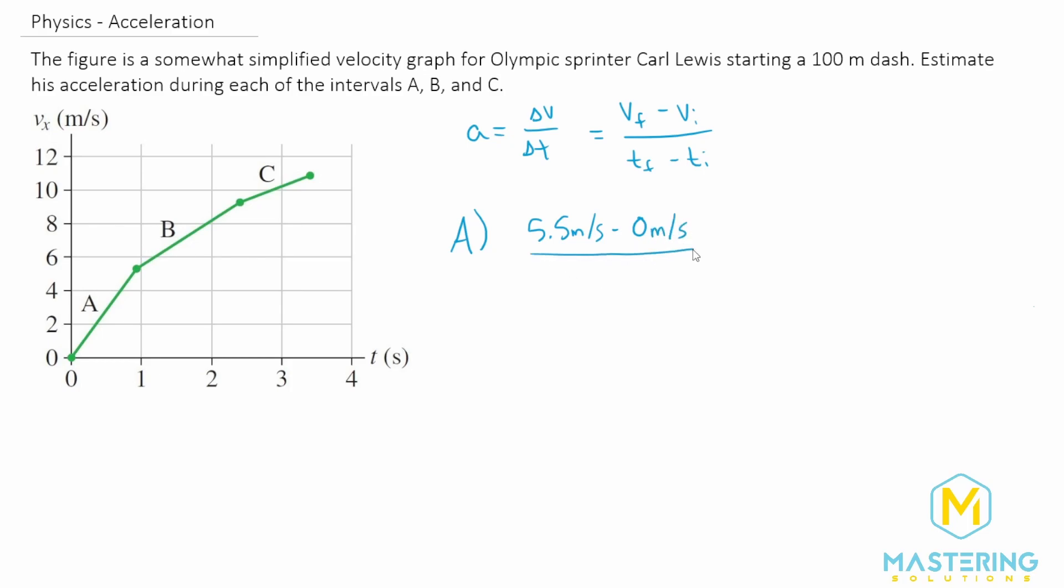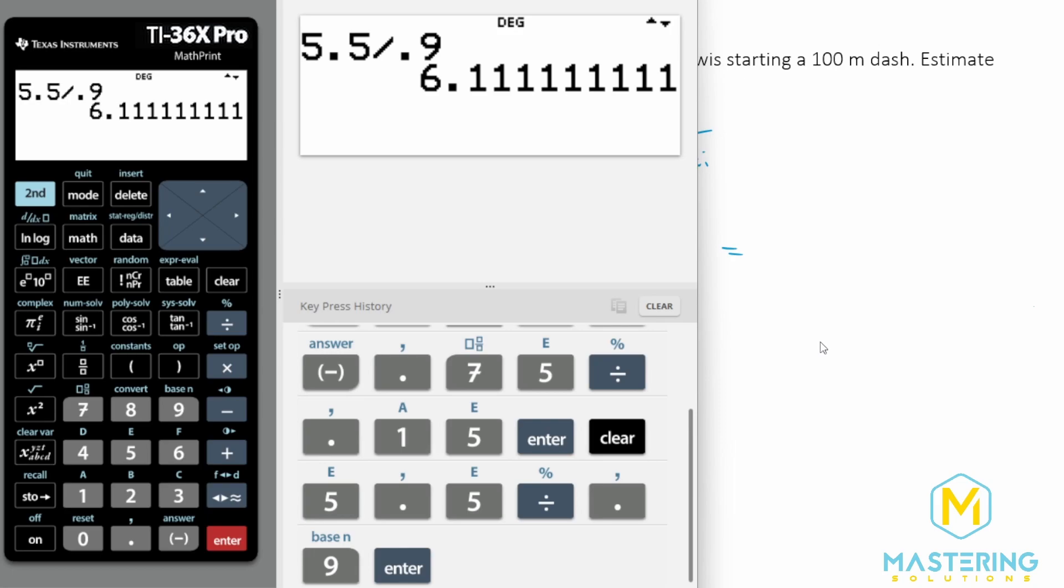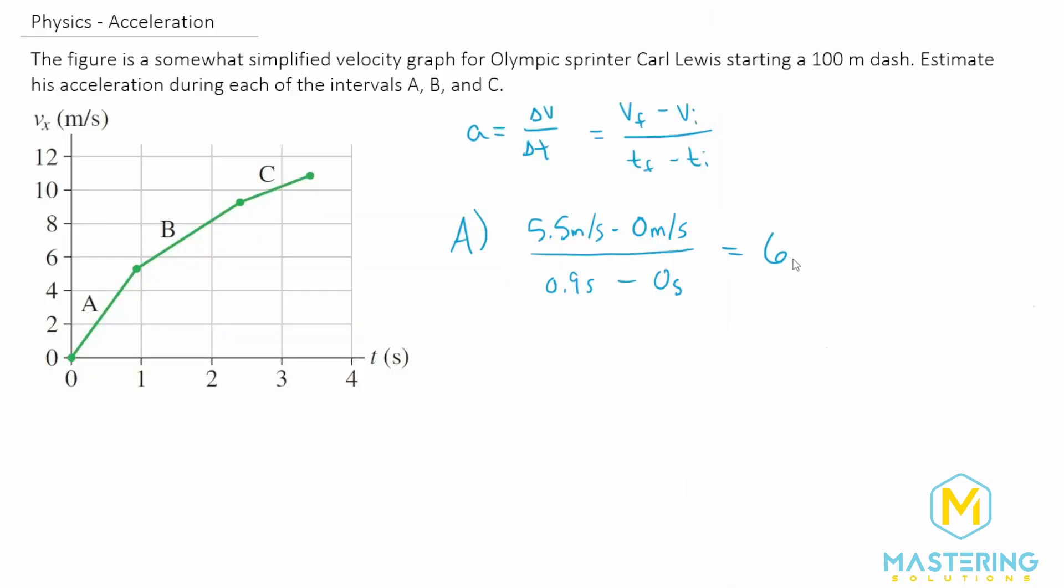So zero meters per second, divided by the T final, which is not quite one. So let's say 0.9 seconds minus the initial, which we just talked about as zero seconds. So 5.5 divided by 0.9 gives us 6.1 meters per second squared.